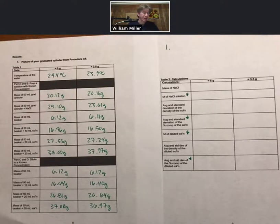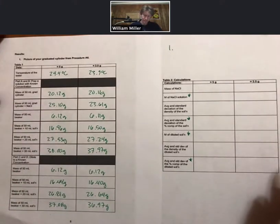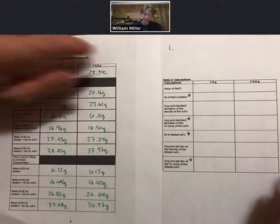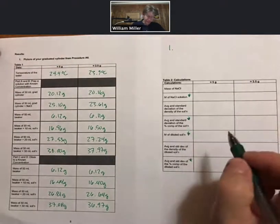I'd like to go over some of the calculations for lab number three and a little bit about the graphing as well. So the calculations I'm going to go over are based on a few numbers. One is the mass of sodium chloride. That's what we're going to go in this first box.